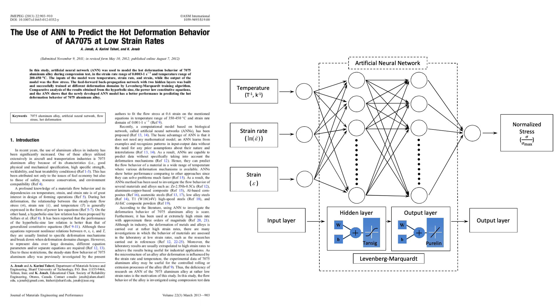In one of my paper, which was the use of artificial neural network to predict hot deformation behavior of 7075 aluminum alloy at low strain rates.